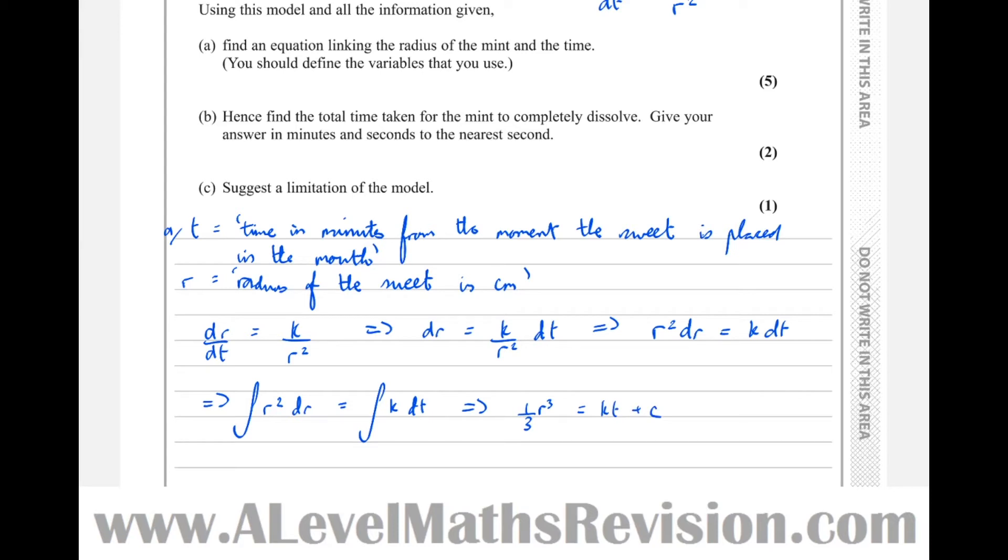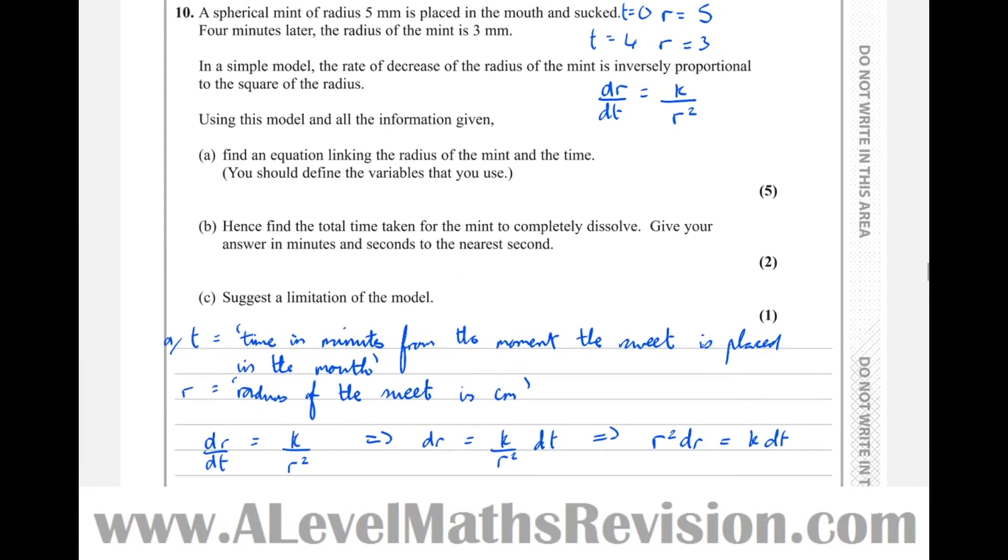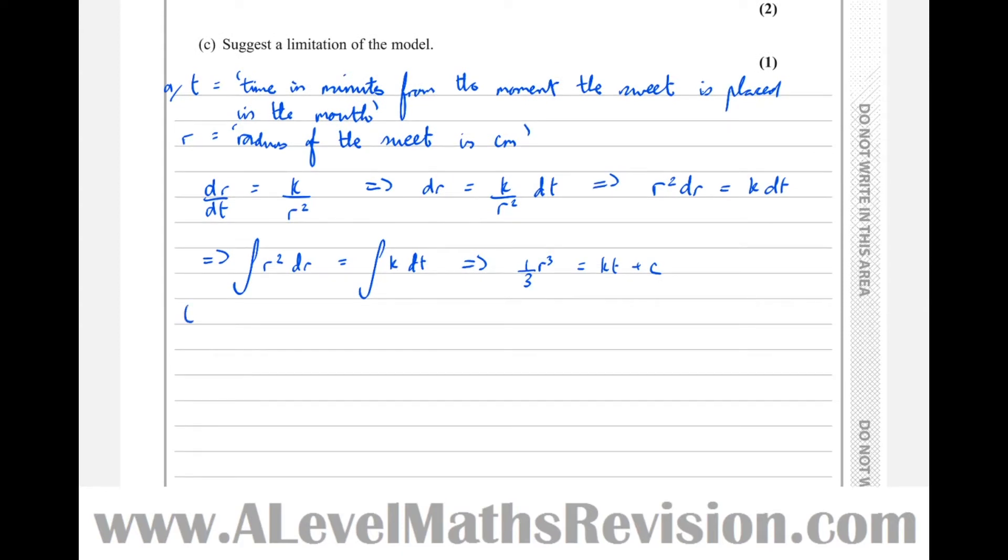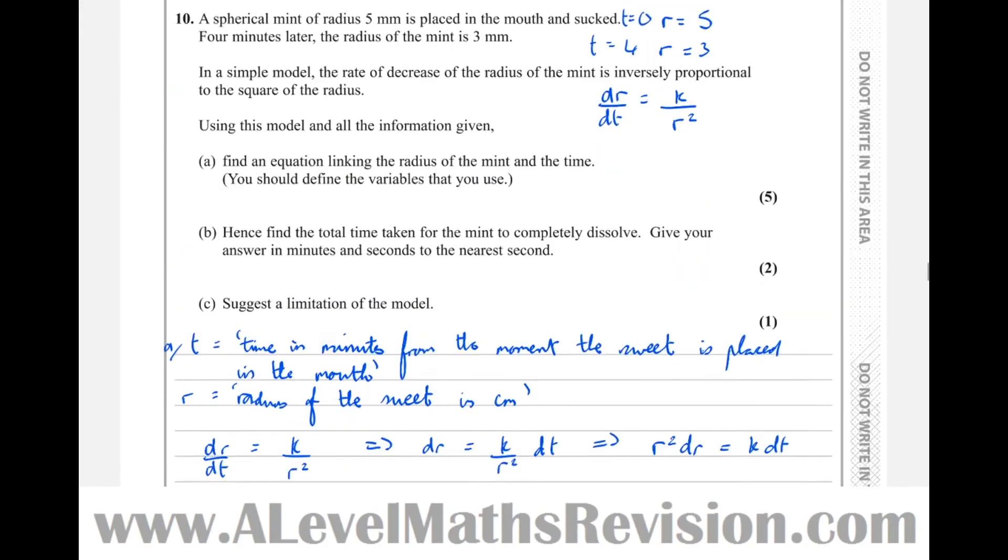So now we're ready to sub in the two points that we've got to try and find what the values of k and c are. So the first point was t equals 0, r equals 5. So let t equals 0, r equals 5. And that means that a third of 5 cubed equals c, which means that c equals 125 over 3. So now, t equals 4.